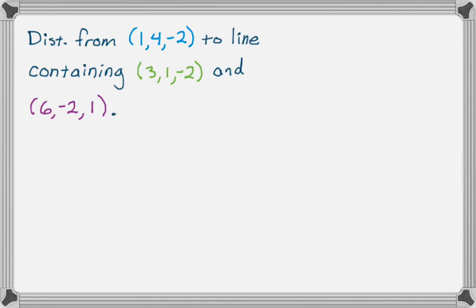So we want the distance from the point (1, 4, -2) to the line containing (3, 1, -2) and (6, -2, 1).